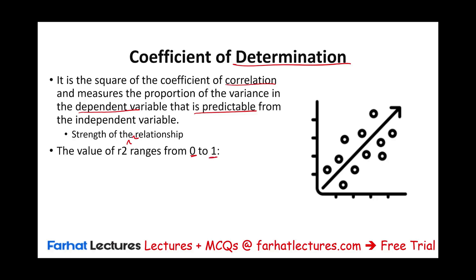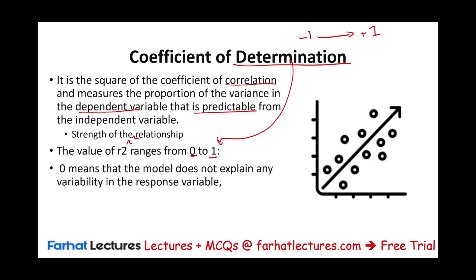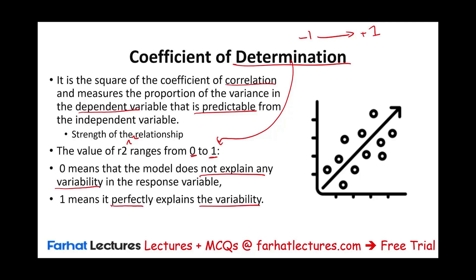R-squared ranges from zero to one — don't confuse this with the coefficient of correlation, which goes from negative one to one. The coefficient of determination goes from zero to one with no negative values. If it is zero, the model does not explain any variability in the response variable. If it is one, it perfectly explains the variability — meaning we are 100% sure those two elements, the dependent and independent variables, work together and the relationship is perfectly explained. Seldom is the relationship exactly zero or one.